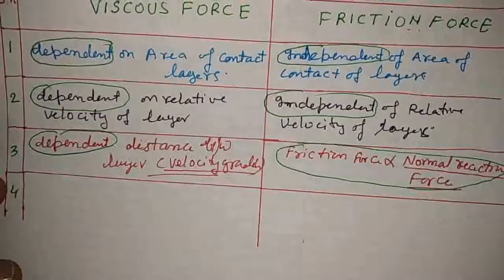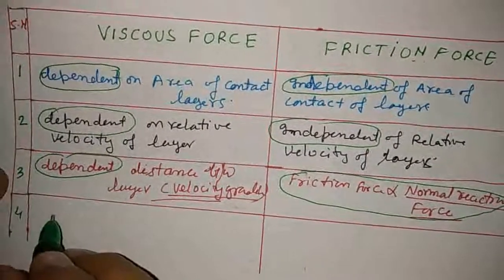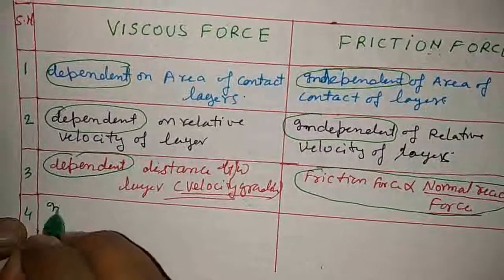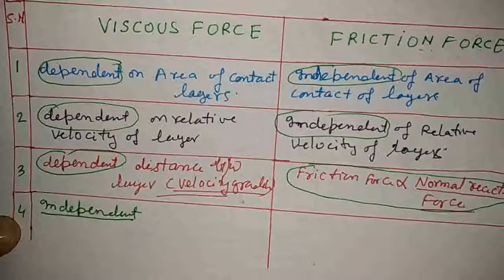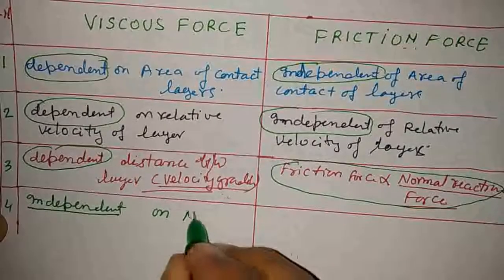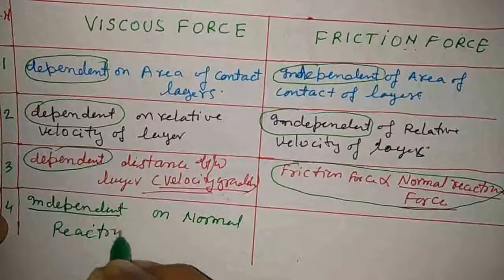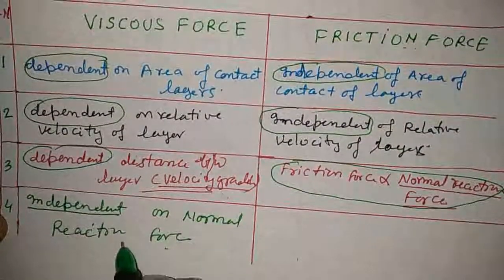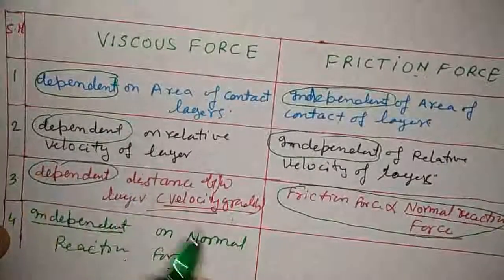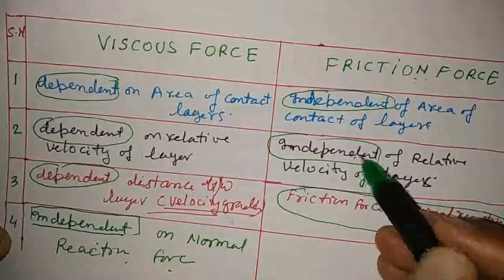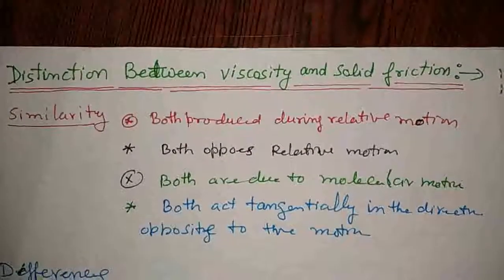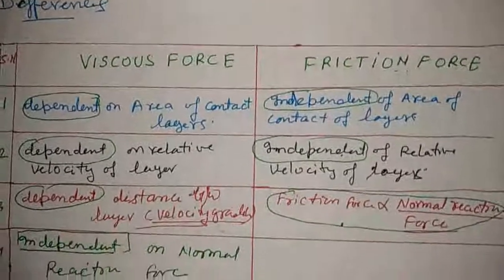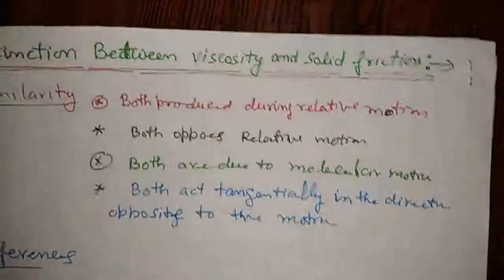So this covers all about the similarities and differences between viscous force and frictional force. Viscous force has three dependencies and one independency, while friction force has two independencies and one dependency. This is all for today. Thank you and have a nice day.